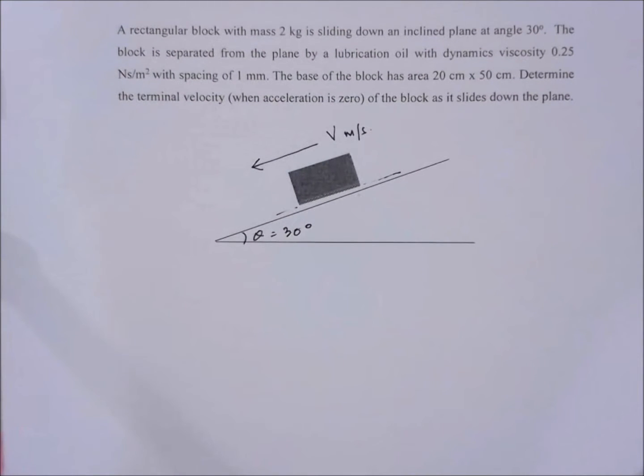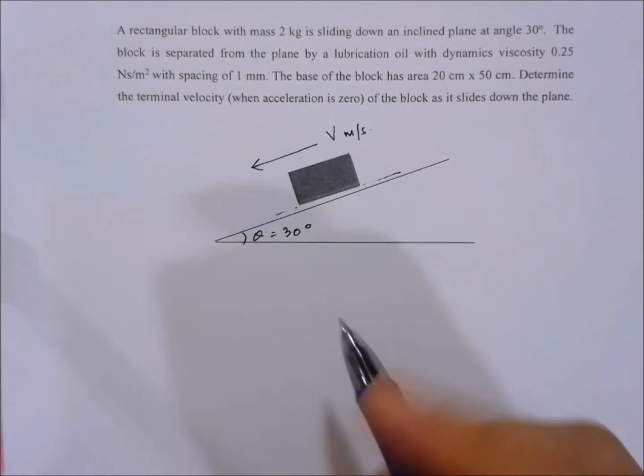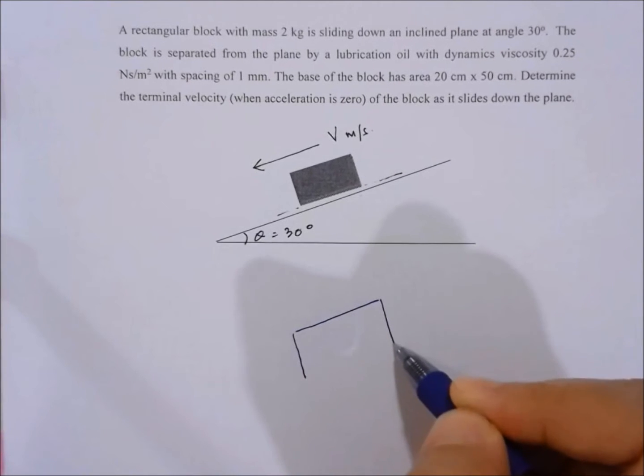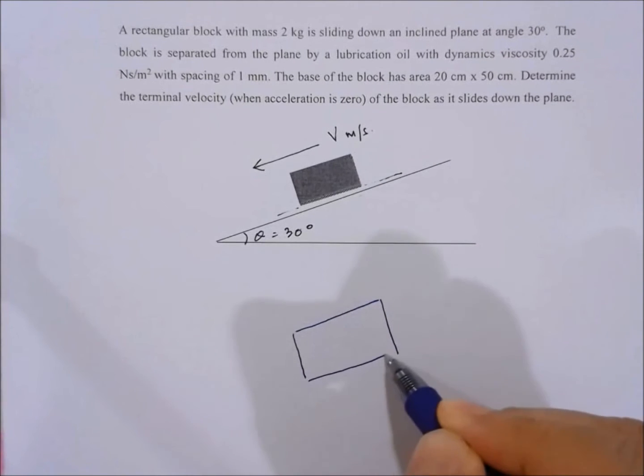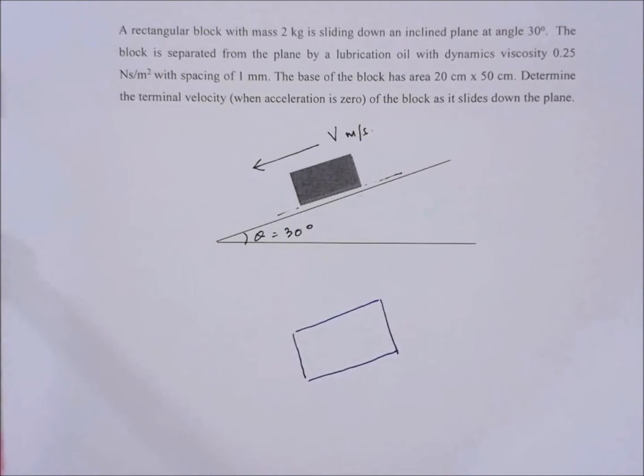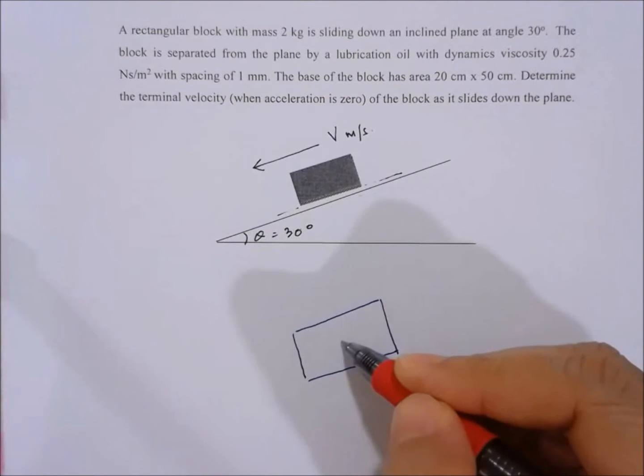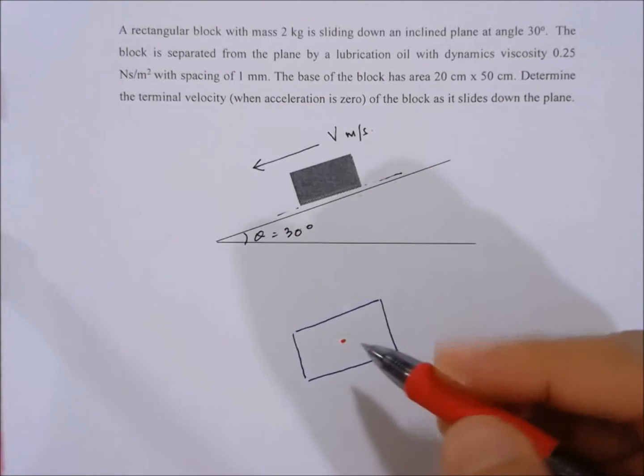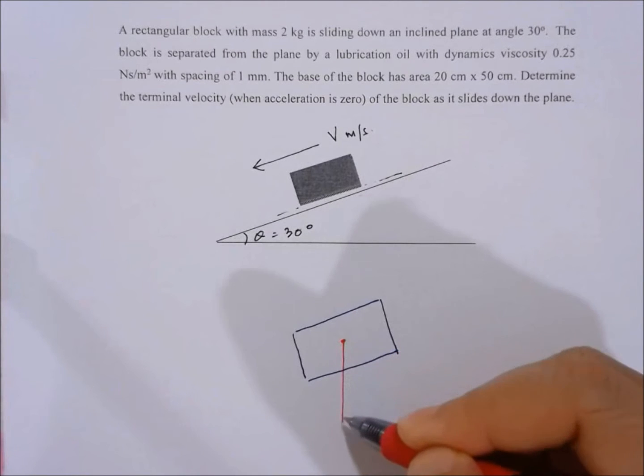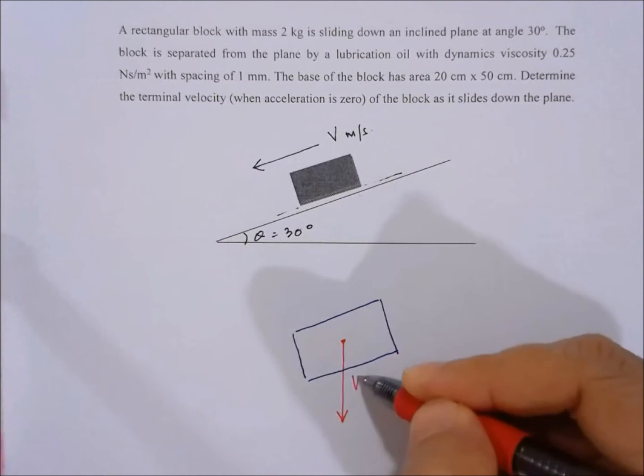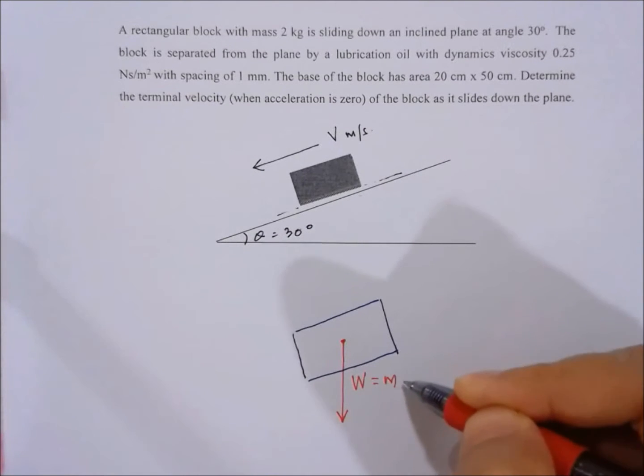The first thing we need to do is consider the free body diagram of the block. There will be a gravitational force due to weight which is acting from the center of gravity of the block directly downward, and that is equal to W which is equal to mg.